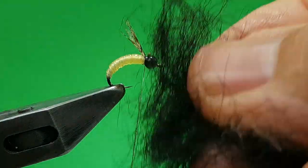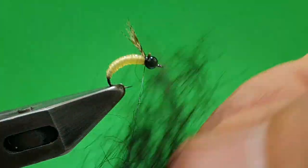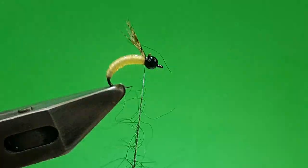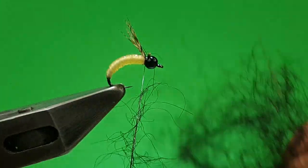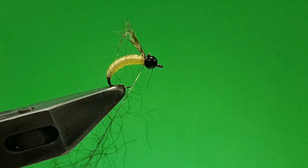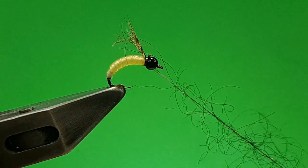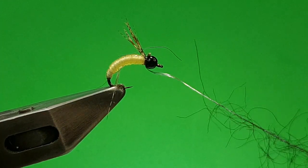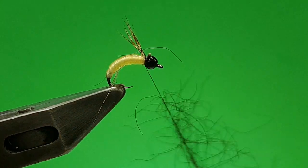And then all you're doing is, just going down your thread. Just dubbing it onto the thread. It's as simple as that. No dubbing loop. No split thread. No nothing like that. It's the easiest way I've found to apply dubbing to a collar.